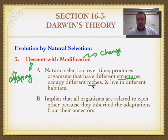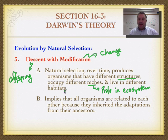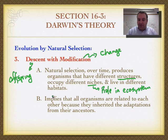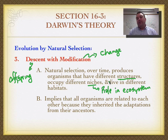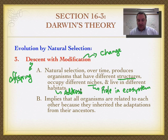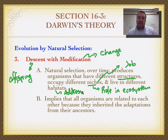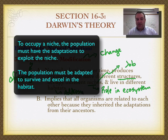Natural selection also causes organisms to occupy different niches. A niche is defined as the role of an organism in an ecosystem, while a habitat is the place where it lives. Think of a habitat as the organism's address and a niche as its job. To get the job you need special skills and abilities, which allow you to live at that address — that's how a niche works in simple terms.